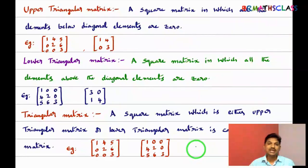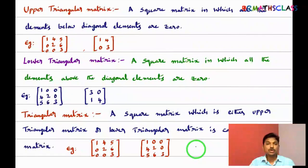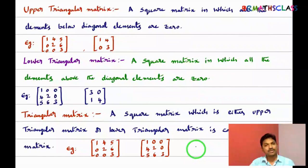So we learned three definitions in this class. Upper triangular matrix: a square matrix in which all the elements below the diagonal are zero. Lower triangular matrix: a square matrix in which all the elements above the diagonal elements are zero. Triangular matrix: a square matrix which is either upper triangular matrix or lower triangular matrix.